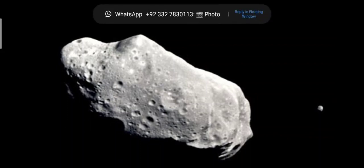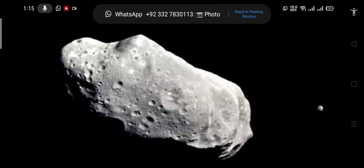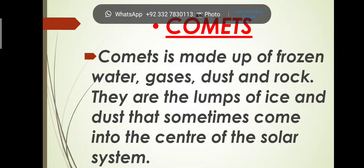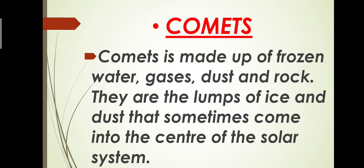Then moving on towards the next celestial body which is about comet. What is comet? Comets are the lumps of ice and dust that sometimes come into the center of the solar system. When comets get close enough to the sun, heat causes them to evaporate. Heat causes the gas and dust to evaporate.